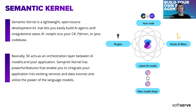Semantic Kernel has a lot of powerful features that enable you to integrate your application and existing services with AI, to utilize the power of language models. It also provides features like plugins, hooks, and filters, which I'm not going to cover a lot today, but I will talk about them at the end of our session as possible next steps for improvements of such applications.